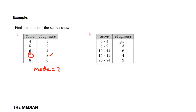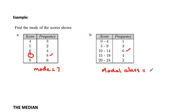Over here what we've got is grouped data. We would ask which group occurs the most often, or in which group do the scores occur most frequently. We go down the frequency column, find the group that is most frequent, and we say that the modal class is equal to the class that is 10 to 14. So we call this not the mode, but the modal class. That's all you have to do to find the mode.